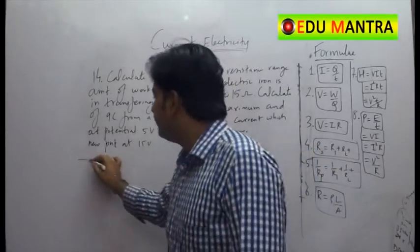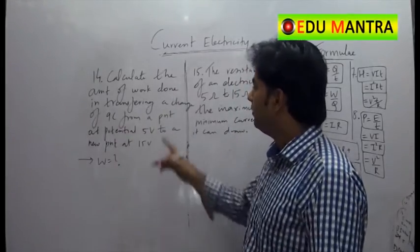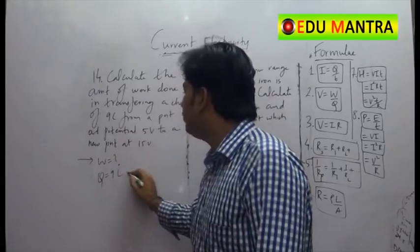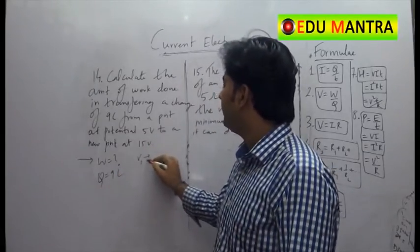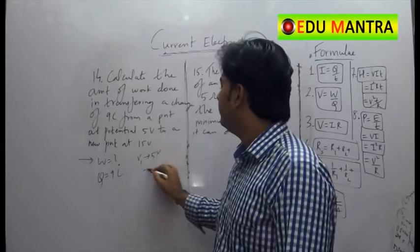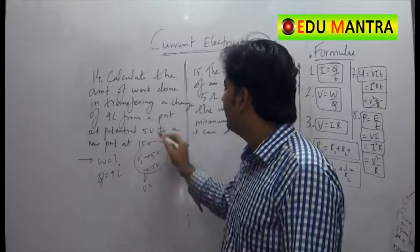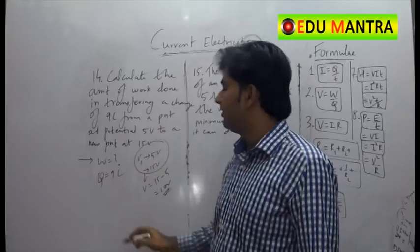So we need to find the work done and what is the charge value. It is 9 coulombs and the potentials of initial and final point are 5 volt to 15 volt. So what is the potential difference between the two points? It is 15 minus 5, that is 10 volt of potential difference.